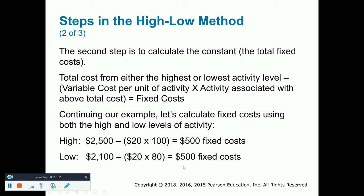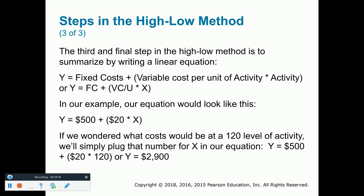So Y equals A plus BX, and we utilize that using the high-low method. Now that we've broken out our mixed cost, we know how much is fixed and how much is variable. We can now budget in the future — for example, what if we had 120 hours as the level of activity? The total cost is going to be the fixed piece of $500 plus $20 times 120, so we can estimate our total cost is going to be $2,900 at a level of 120 hours. We would not be able to do this if we did not understand how costs behave — cost behavior is the key to all of this.